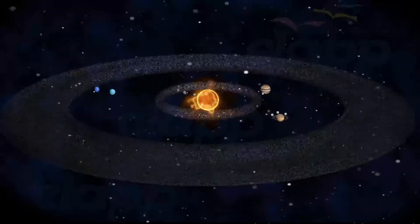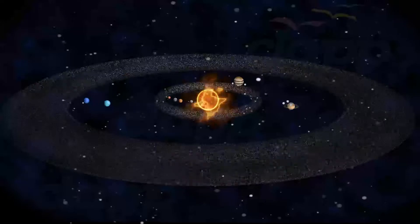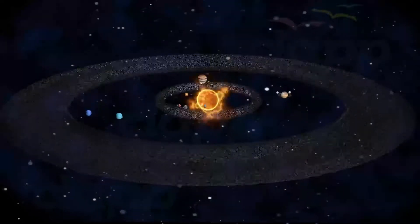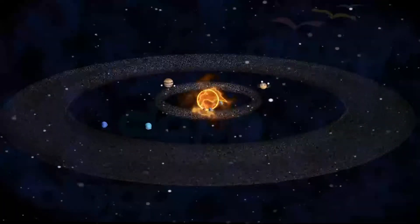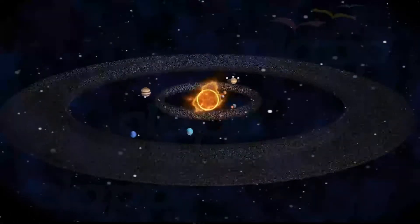Most of this matter gathered in the center, whereas the rest flattened into an orbiting disk that became the solar system.